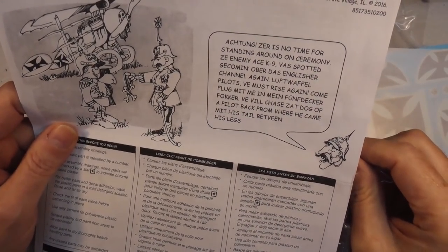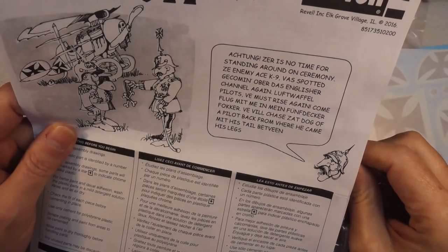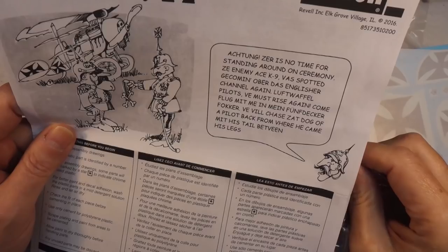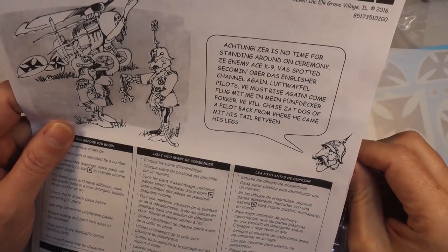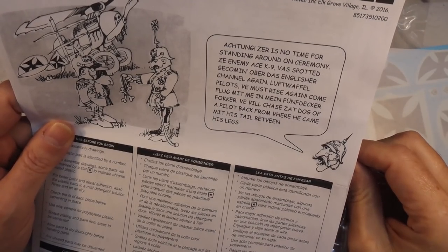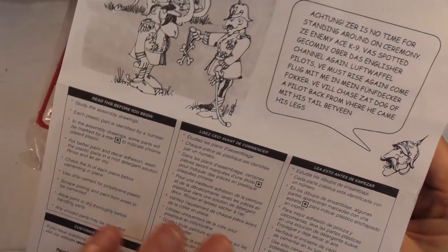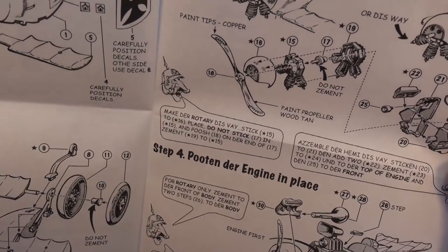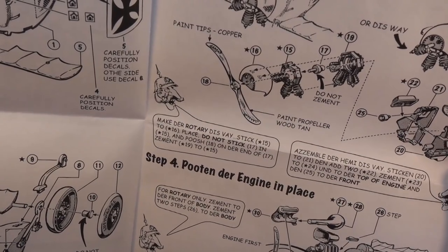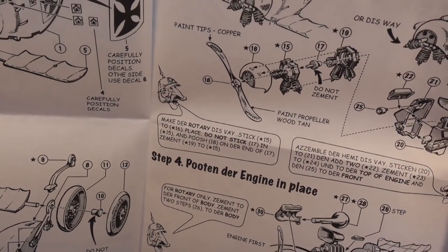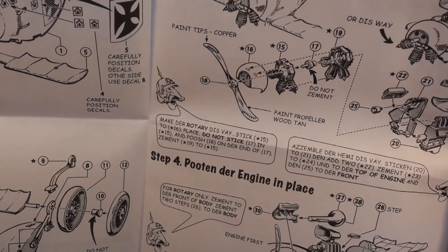Achtung, there is no time for standing around on ceremonies. The ace, K9, was spotted coming over das englische channel again. Luftwaffe pilots, we must rise again. Komm flug mit mir in mein fünfdecker Fokker. We will chase that dog of a pilot back from where he came from, mit his tail between his legs. Well, that's, um, yeah. Good grief, really? Okay. I quite like these plans. They're actually quite simple. Almost like cartoon-like, in the way they've been done. I like that. Okay. Right.